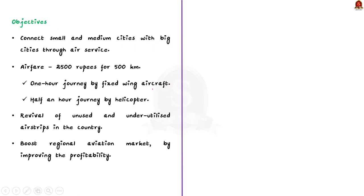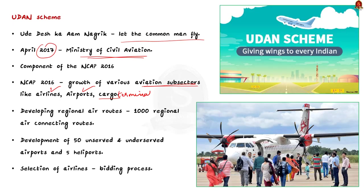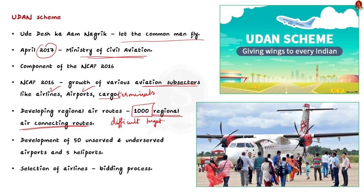The scheme has been working to develop regional air routes and operationalize a number of new airports in different states and union territories. Under the scheme, the Civil Aviation Ministry has set a target of developing 1,000 regional air connecting routes. In addition, 50 unserved and underserved airports, including 5 heliports, will also be developed as part of the UDAN scheme.